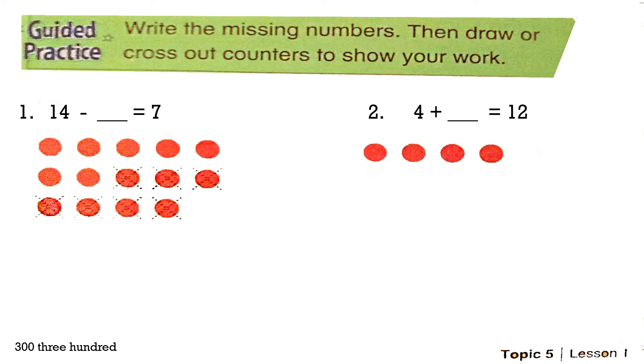Number 1: 14 minus an unknown number equals 7. We have 14 counters. I can count from 7 to 14 and I get 7. So the unknown number is 7. 14 minus 7 equals 7.